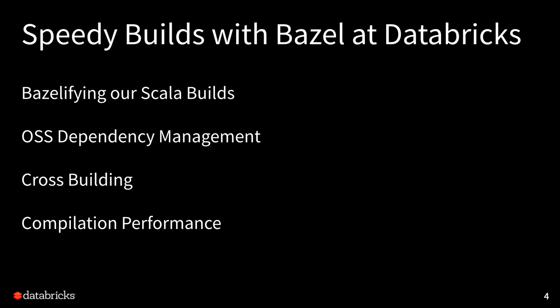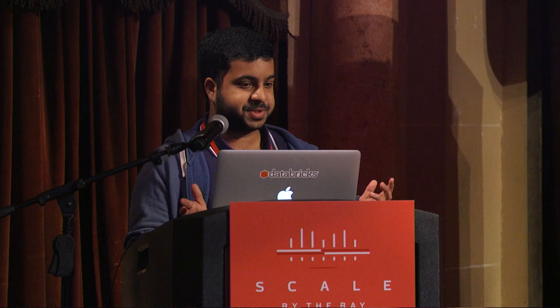Today we'll go over four main areas: the process of Bazelifying our Scala builds, how we do dependency management, then Howie will cover how we do cross-builds to make it easy to upgrade between Scala versions, and finally compiler performance and the investments we've made there. I'll start with how we got to Bazel.